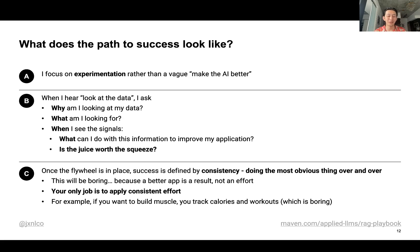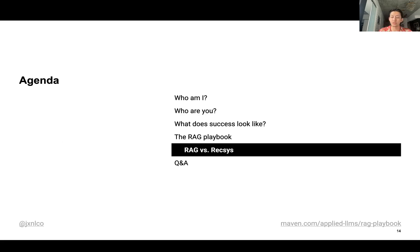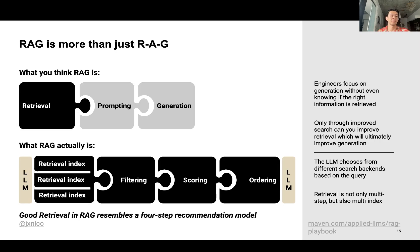If you want to be strong and build muscle, the thing you actually have to do is track your calories and track your workouts. The goal is to reduce an ambitious goal — be stronger or live longer — to something as boring as tracking calories and working out. The idea I really want to push for the first half of this course is that a RAG application is going to look very much like a recommendation system.